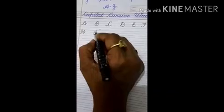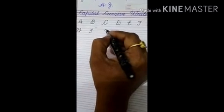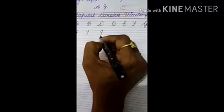For J, the way you have made I, but here you have to come till line number four. This is called capital J.